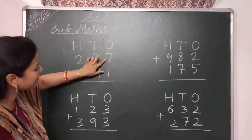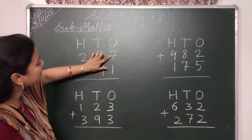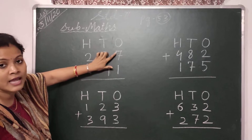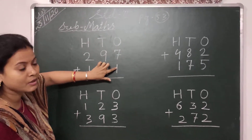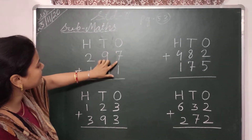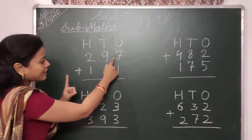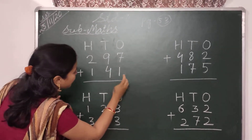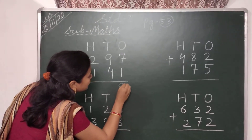Here in the 1's place, the numbers are 7 and 1. 7 is the larger number, so I keep the larger number in my mind and add the smaller number. 7 is in my mind and I take 1 finger: 7, then 8. I write here the number 8.